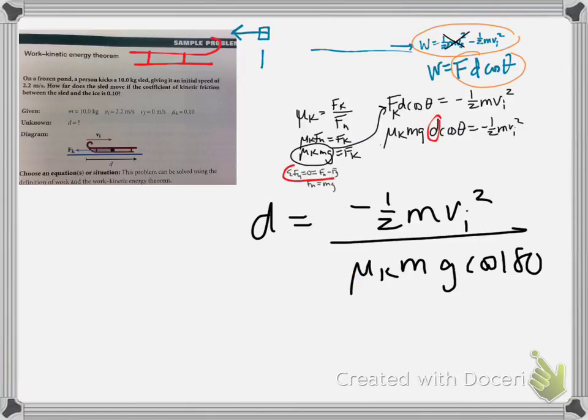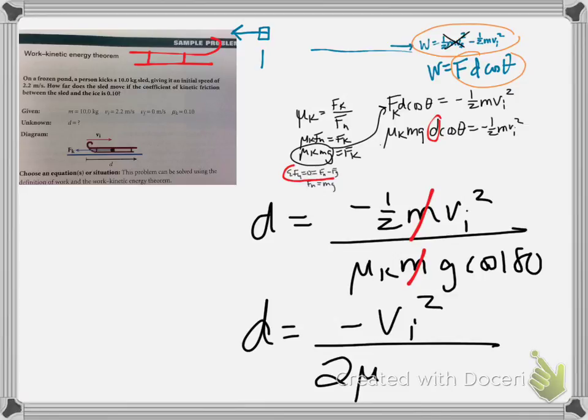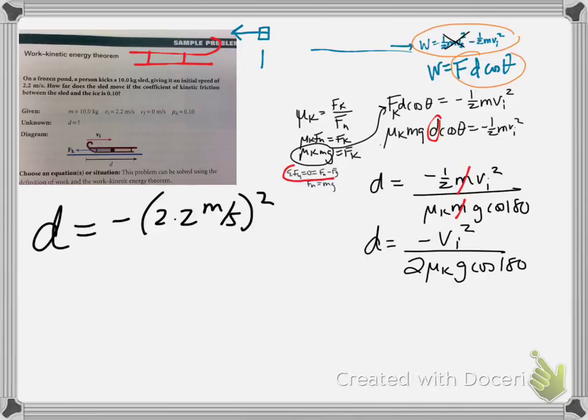Would it matter if we didn't have the mass of the sled? No, because masses cancel, so we have d equals, and I'm going to change that one-half on the numerator to a two in the denominator, negative vi squared over 2 mu k g cosine 180. That is how far it goes.